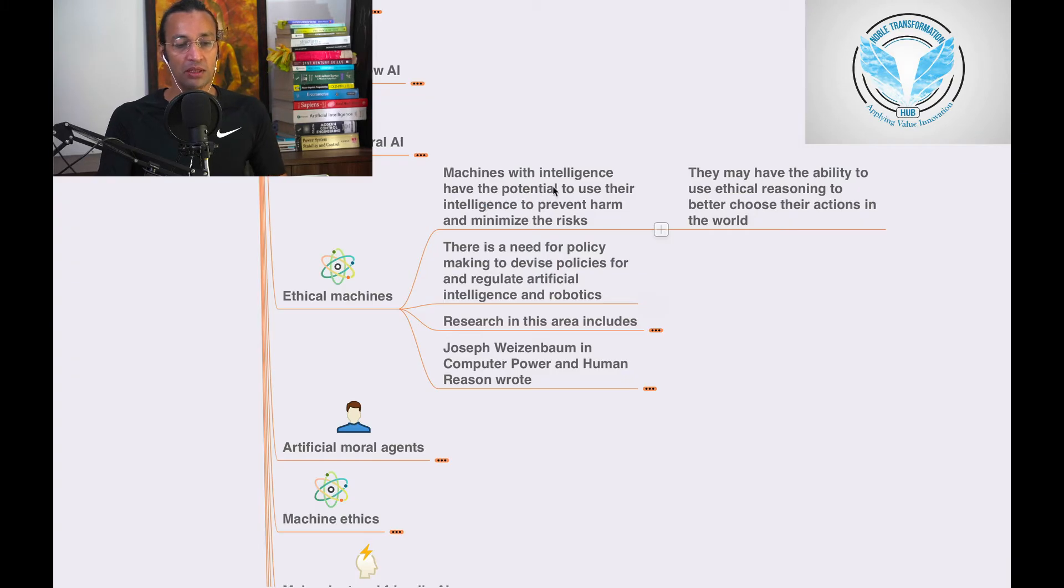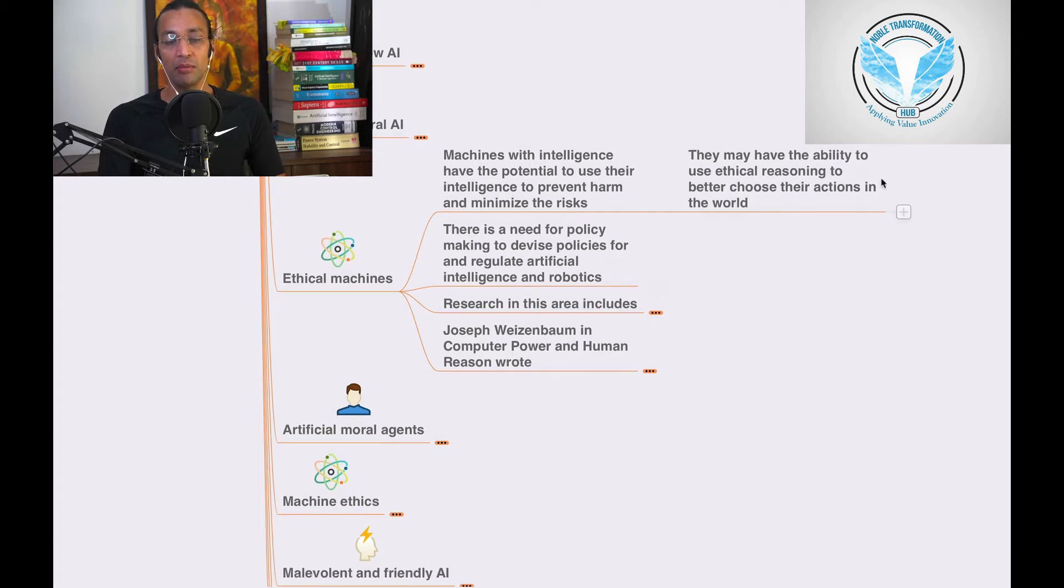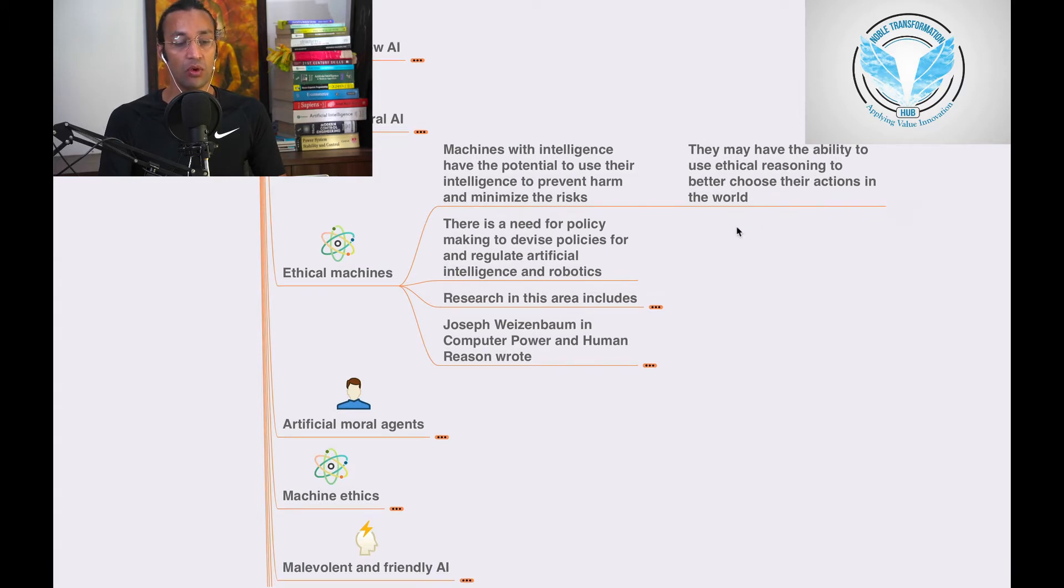Ethical Machines with intelligence have the potential to use their intelligence to prevent harm and minimize risk. They may have the ability to use ethical reasoning to make better choices about their actions in the world.